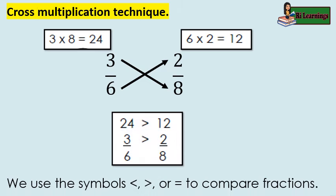Then compare the products. Twenty-four is greater than twelve. Therefore, we can say that three-sixths is greater than two-eighths.